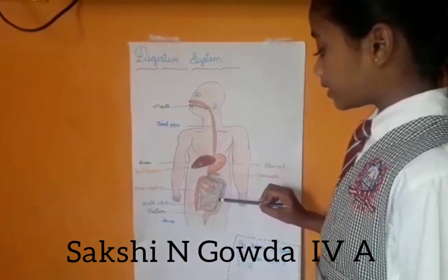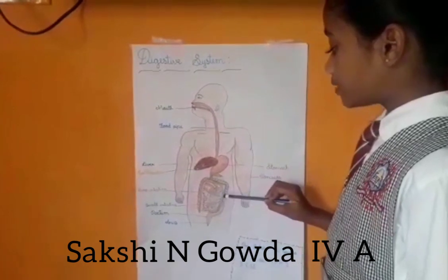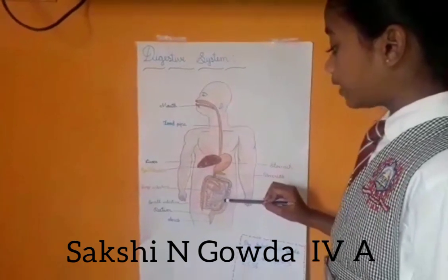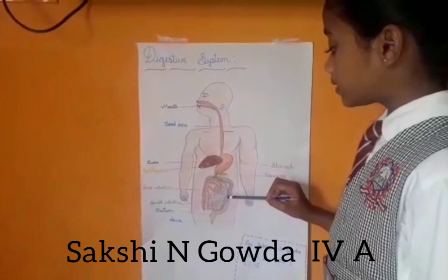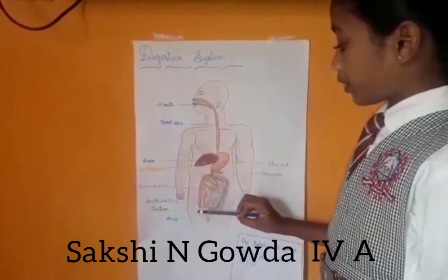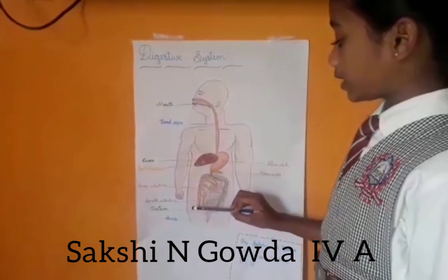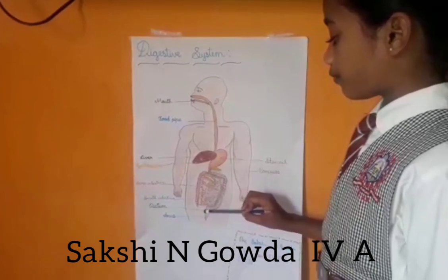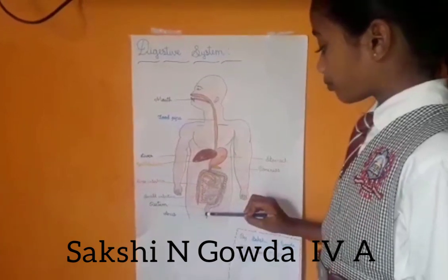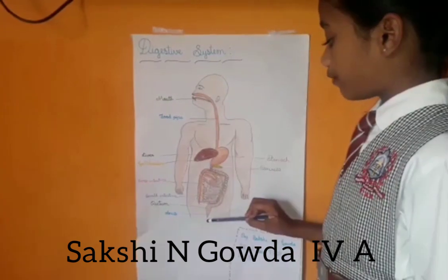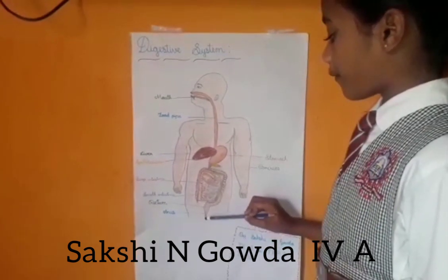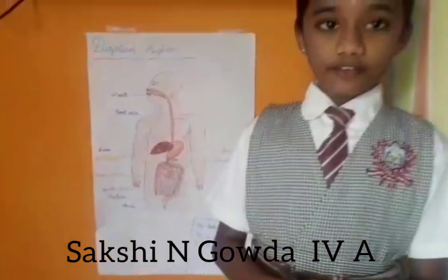Large intestine: Inside the large intestine, water particles are absorbed and the large intestine produces faeces. Rectum: Inside the rectum, the faeces are stored for a short time. Anus: From the anus, the faeces are removed completely from our body. Thank you.